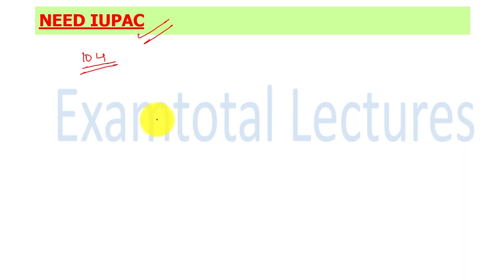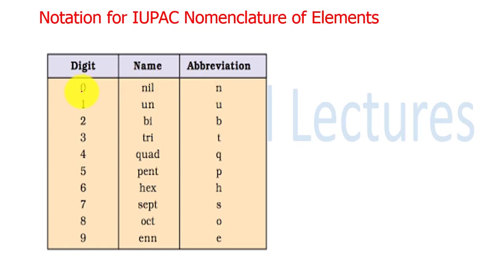To avoid these controversies, because of this atomic number 104, IUPAC recommended that until a new element's discovery is proved, we will apply a systematic nomenclature. If the discovery is not proved, then an official name will be given. This nomenclature directly comes from atomic number. The notation is: for 0 it is nil (n), for 1 it is un, 2 is bi, 3 is tri, 4 is quad, 5 is pent, 6 is hex, 7 is sept, 8 is oct, 9 is enn. IUPAC has given names for atomic numbers above 100.